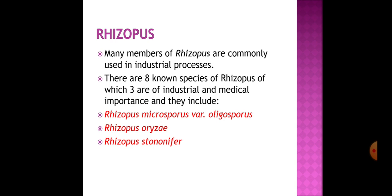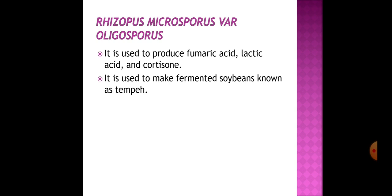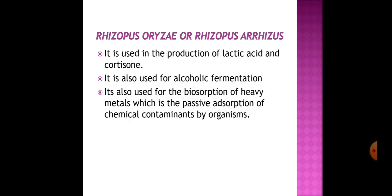The three industrially important Rhizopus species are Rhizopus microsporus var. oligosporus, Rhizopus oryzae, and Rhizopus stolonifer. Rhizopus microsporus var. oligosporus is used in production of fumaric acid, lactic acid, and cortisone. It is also used for production of fermented soya beans, alcohol fermentation, and biosorption of heavy metals, which is the passive adsorption of chemical contaminants by these microorganisms.